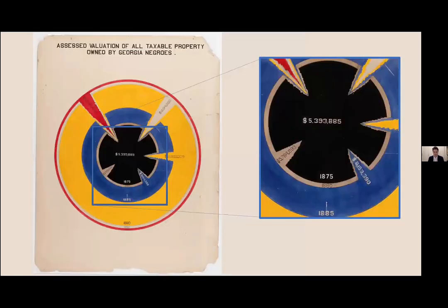A similar inventive approach is taken in a reinvented pie chart addressing taxable property. The values of taxable property for each five-year incremental increase are displayed at a variable rate. By layering all of the data into a bullseye-like display and using tears to reveal each half-decade of growth like rings in a tree, the diagram unfurls its data narratively. This would have also invited visitors to the exhibit to stay longer and better understand the data on display.